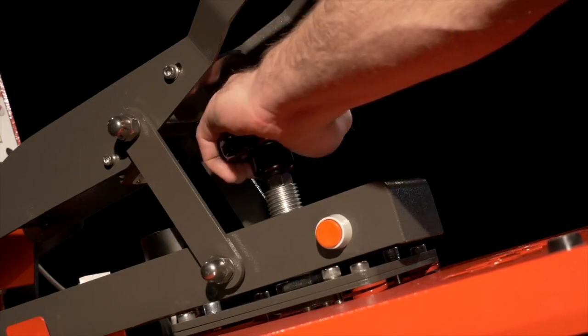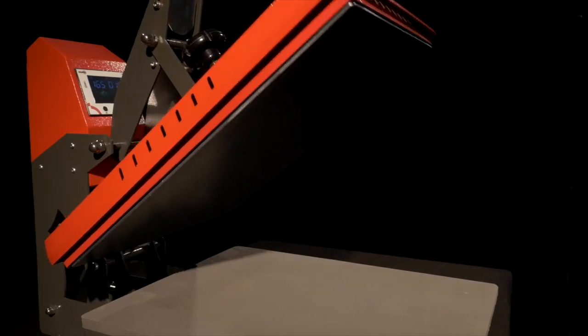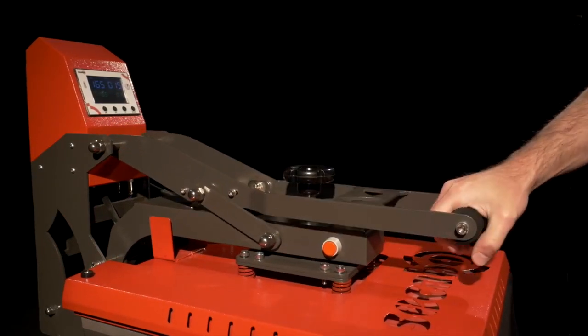The contact pressure can be set using a large hand wheel on the top of the heat plate. Closing the press lever initiates the pressing process.